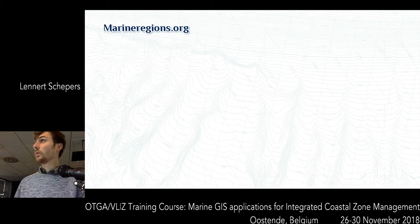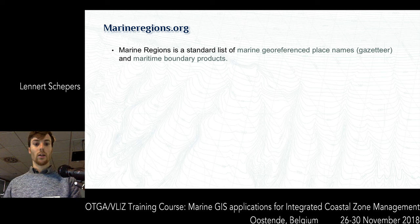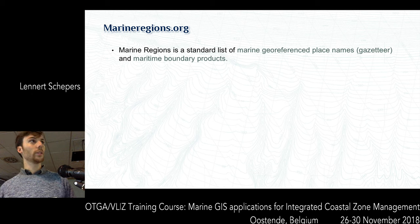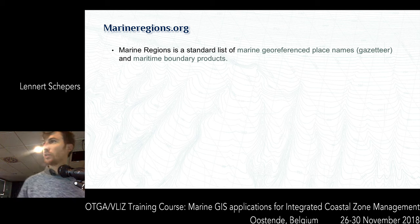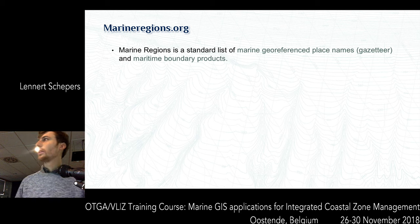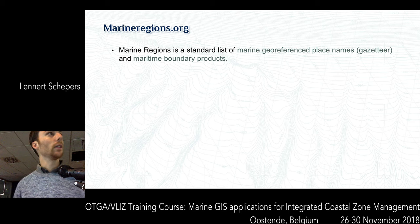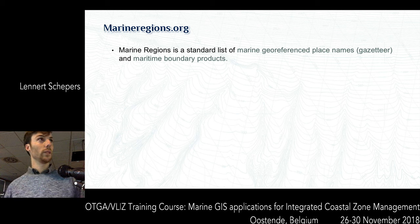So what is marineregions.org? It's a website that we developed. It's also a database and it actually consists of two big things. First of all, it's a list - a database of marine georeferenced place names. It's actually an atlas of a lot of marine names. Such a database is also called a gazetteer. And we also provide a lot of maritime boundary products. So these are the two main things in marineregions.org.